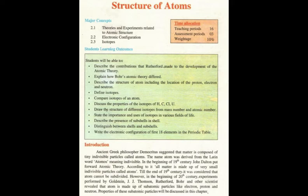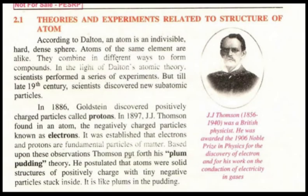According to new scientists — Bohr, Rutherford, Goldstein, and J.J. Thomson — atoms can be further divided into subatomic particles. These subatomic particles are electron, proton, and neutron. Atom is the main thing, and atoms are further divided into these subatomic particles. These were the contributions of different scientists, which we have discussed in our introduction.